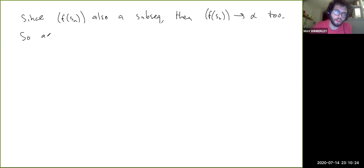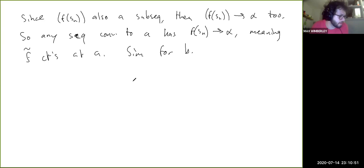So any sequence converging to a has f(sn) approaching alpha, meaning f tilde is continuous at a. Similarly for b.